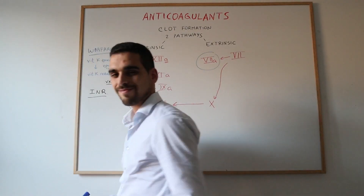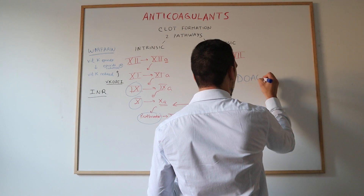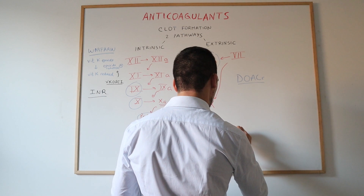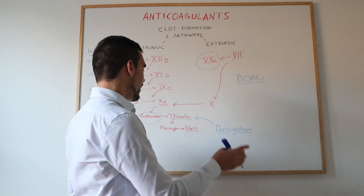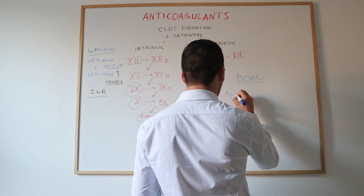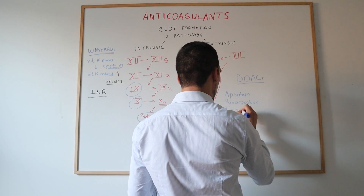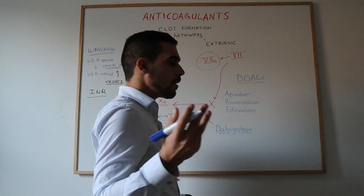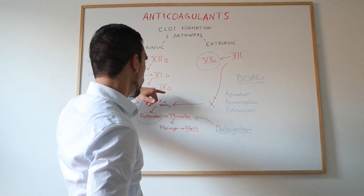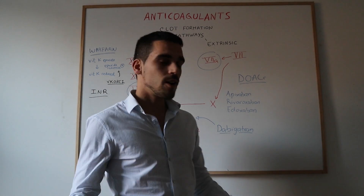Now let's look at a newer class of anticoagulants: the Direct Oral Anticoagulants, or DOACs. Dabigatran directly inhibits thrombin, which is activated Factor 2. The other three — apixaban, rivaroxaban, and edoxaban — are direct inhibitors of Factor 10a (activated Factor 10). By inhibiting Factor 10a, they block the coagulation cascade and ultimately block the formation of fibrin.